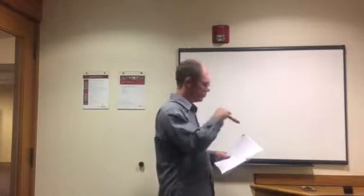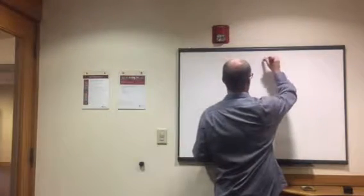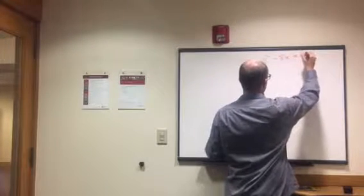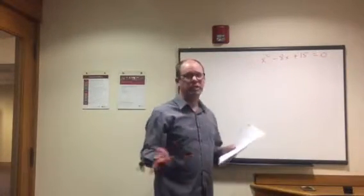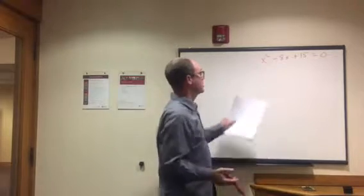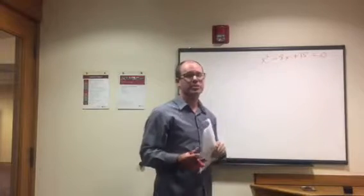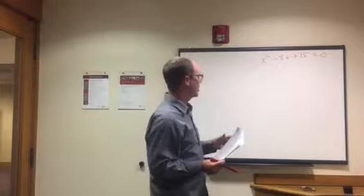Let's take a look at quadratic equations. These can seem complicated but we're going to go over a few examples to hopefully simplify it a little bit. Here's our first equation: x squared minus 8x plus 15 equals zero. With a quadratic equation, we always want to see everything on the left side equal to zero. In this case they've already done that for us, so we're good to go.